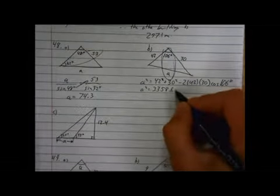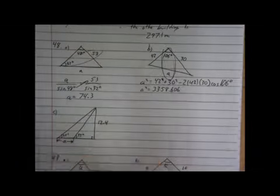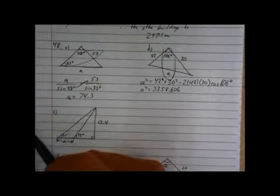Equals, and you're going to get a gigantic number, 3358.606. It's going to be much bigger than these two sides because you haven't taken the square root yet.